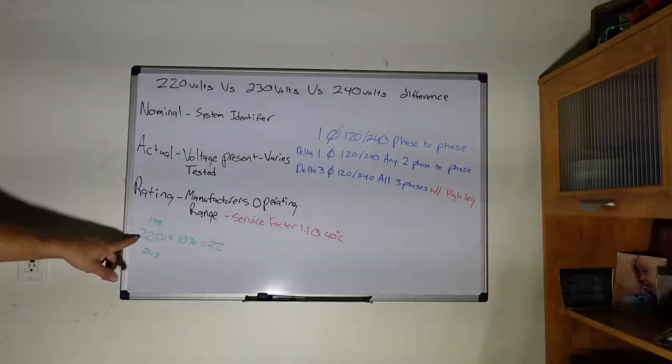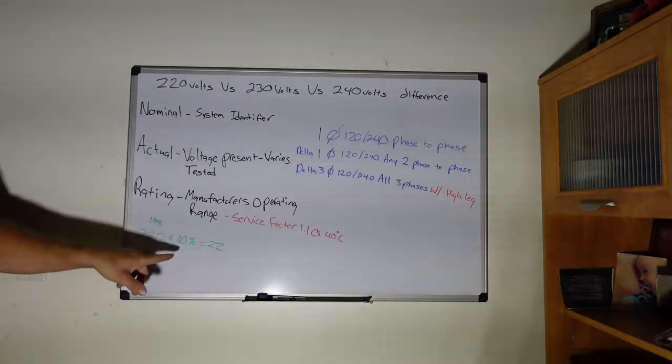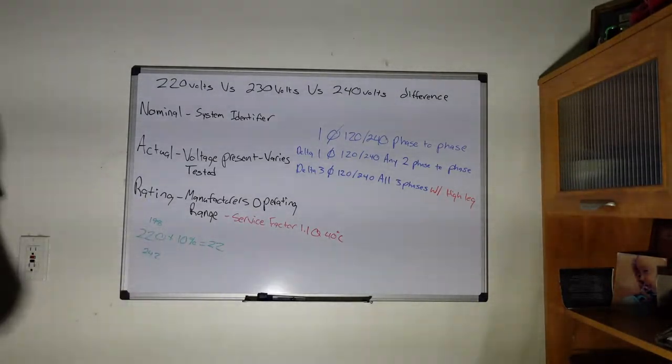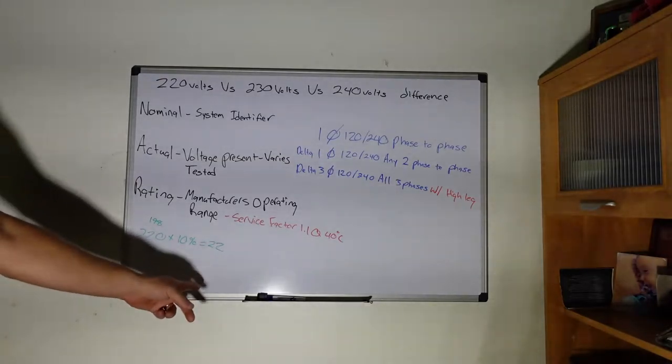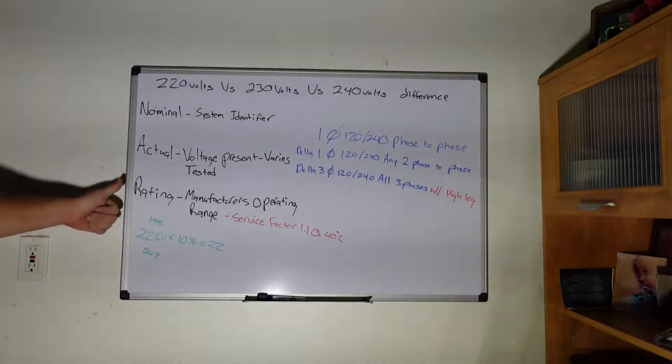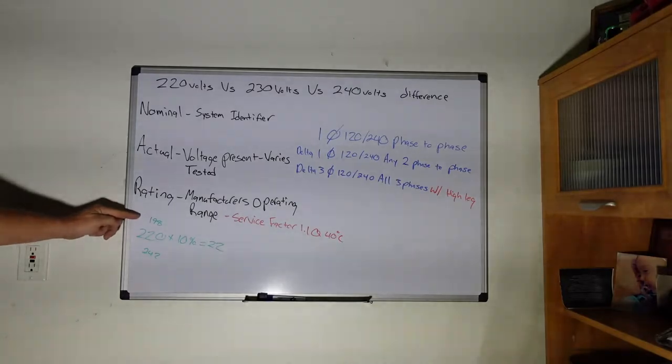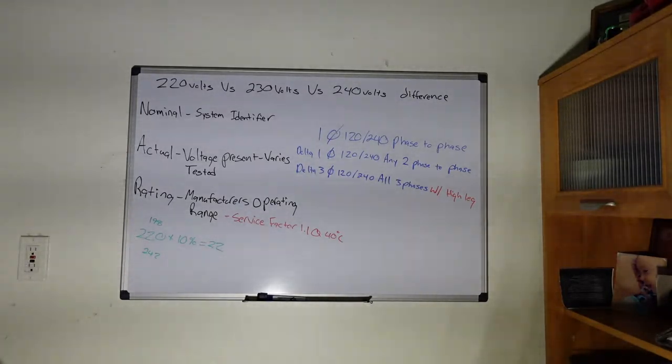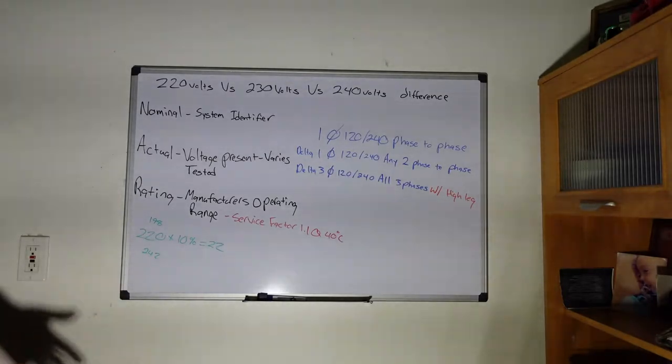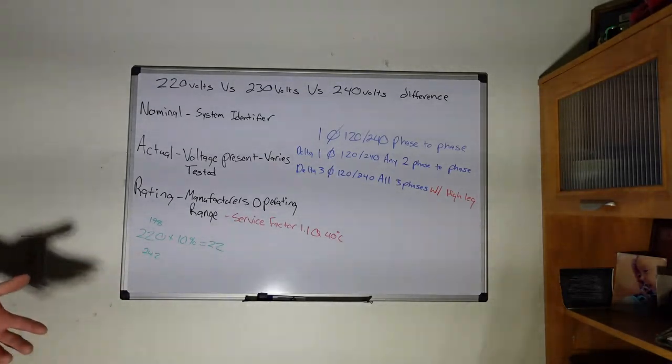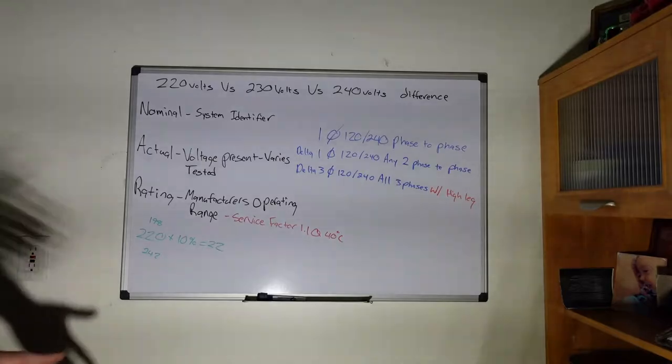So 10%, if the equipment is rated at 220, you will operate within a range plus or minus that. So 10% of 220 is 22. Now you add it and take it away, so your range operating safely for that motor would be 198 to 242.